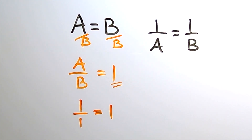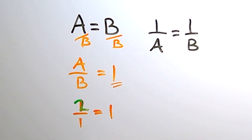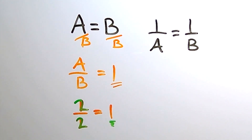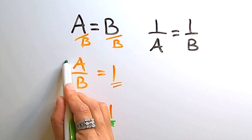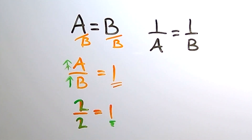Suppose that a were to double from 1 to 2. Well, 2 over 1 does not equal 1, so in order to keep this a 1, b must also double at the same rate, because 2 over 2 is equal to 1, meaning as a increases, b also increases.